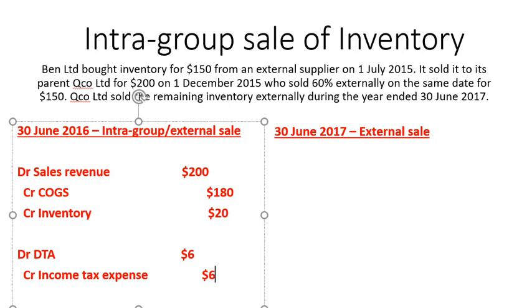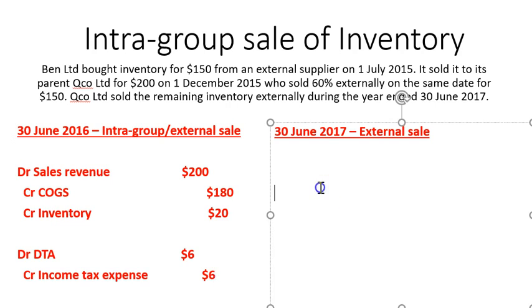From the group's perspective, we're reducing our Income Tax Expense by $6 because we don't believe we should have incurred it yet. We're recognising a Deferred Tax Asset because we've already paid tax on an amount we don't believe we should have, and so we recognise it as an asset.